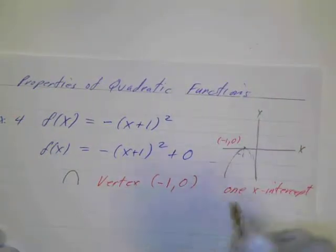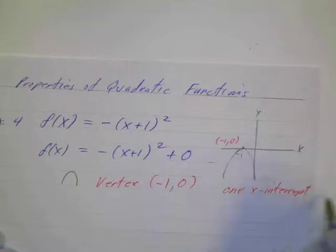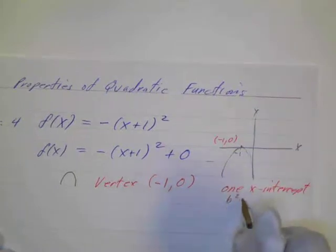It looks like it's going to have a maximum value. So since it has one x-intercept, we know that the discriminant, b squared minus 4ac, will actually be equal to 0.